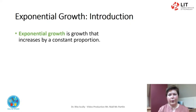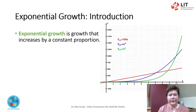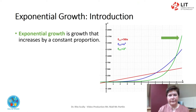Exponential growth is growth that increases by a constant proportion. It is a specific way that a quantity may increase over time. It occurs when an instantaneous rate of change of a quantity with respect to time is proportional to the quantity itself.